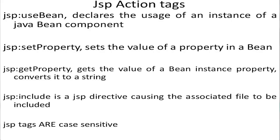You can see the different JSP action tags. JSP colon useBean declares the usage of an instance of a JavaBean component. JSP colon setProperty sets the value of a property in a bean. JSP colon getProperty retrieves that value — the value of the bean instance property is converted to a string. JSP include causes the associated file to be included. Also importantly, JSP tags are case sensitive, so we must always remember to mention the correct case.